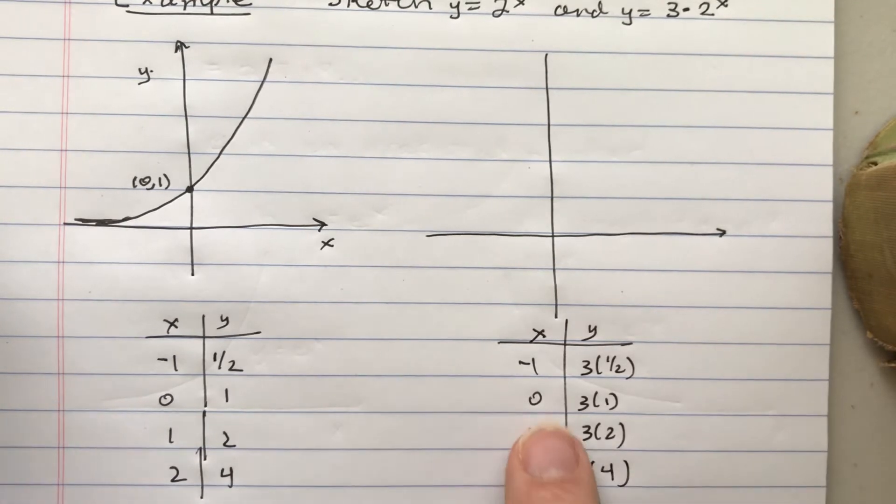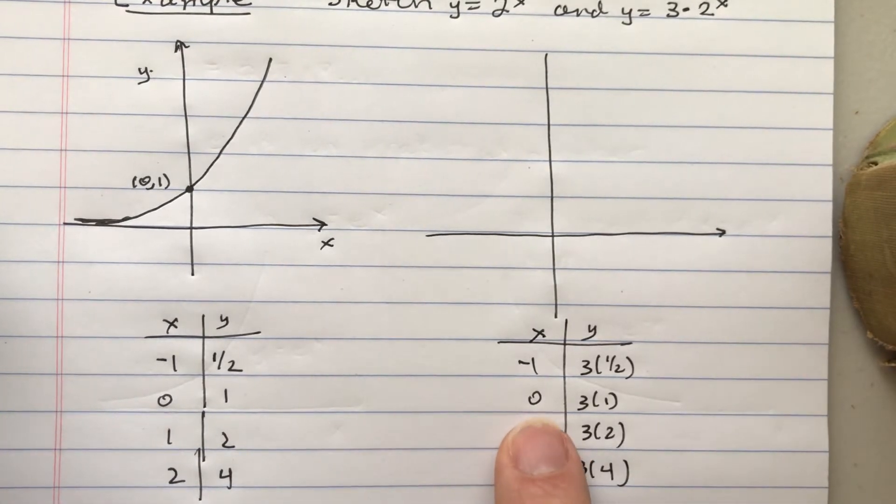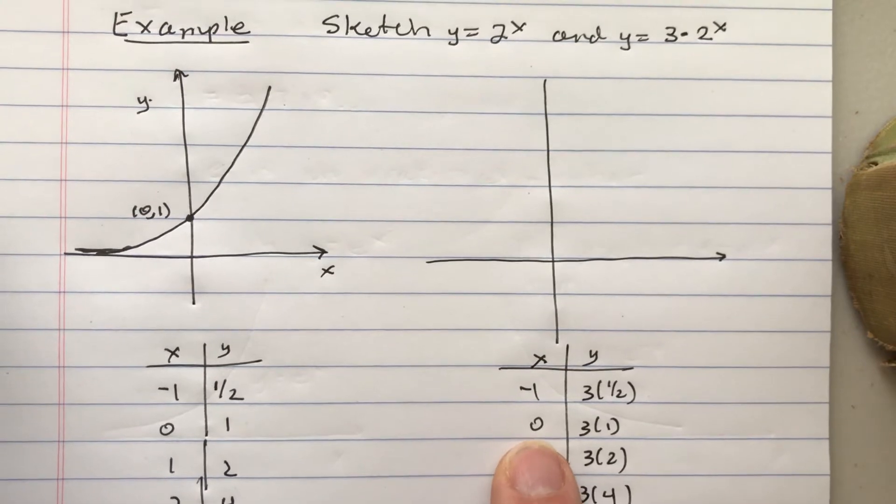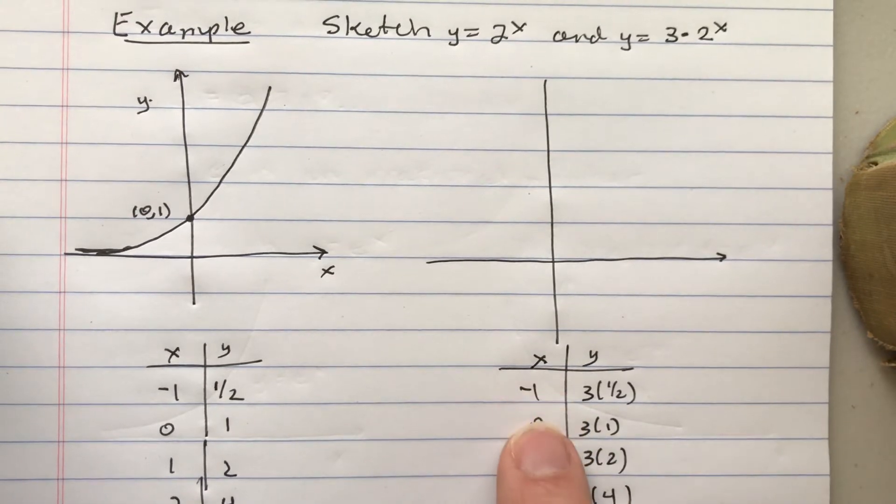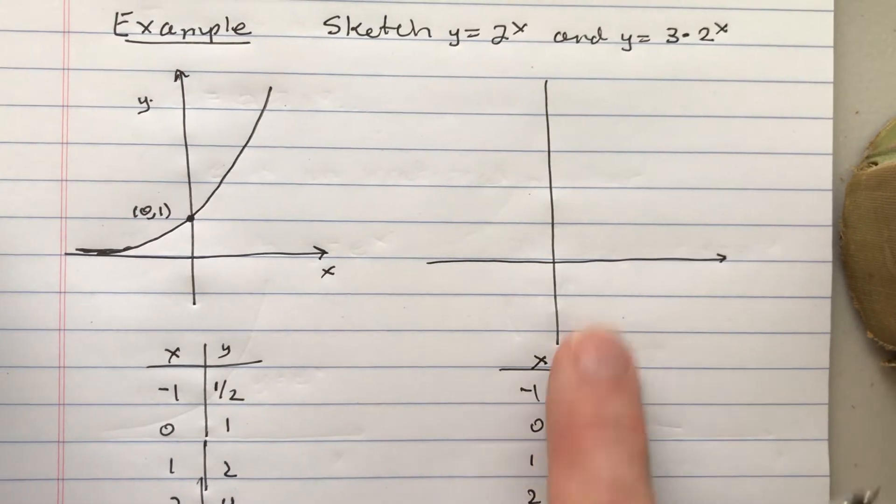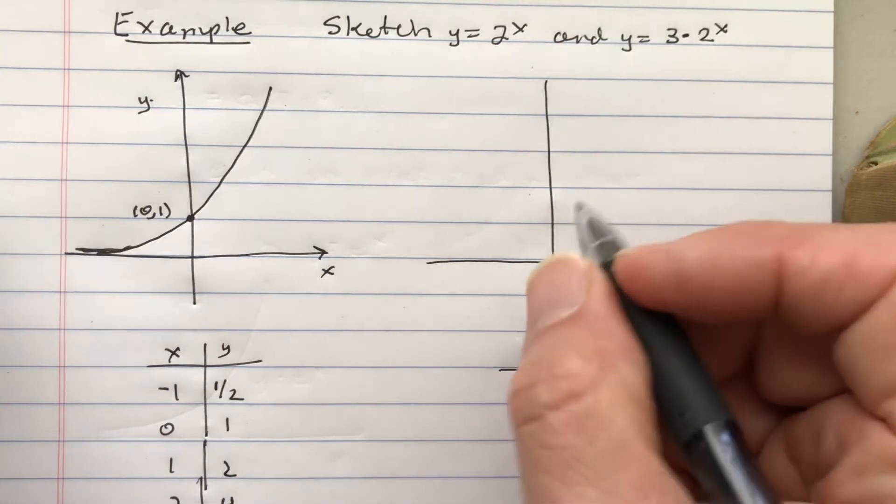And in particular, I think it's important for us to see that when you have x is 0, you get 2 to the 0 is 1 and you multiply by 3 and now you get 3.